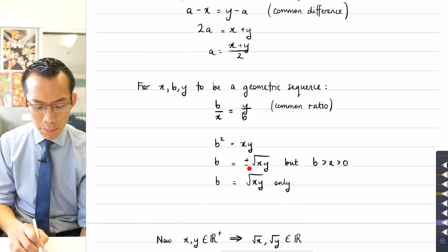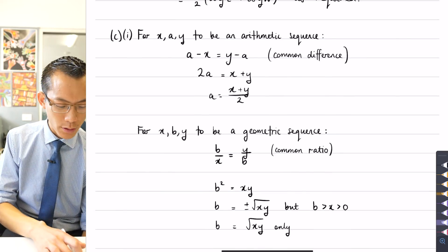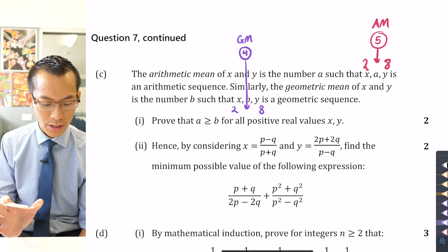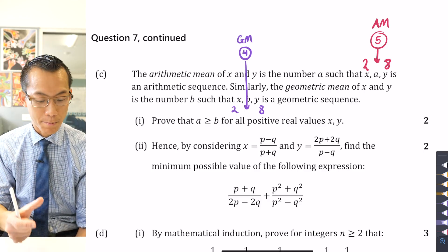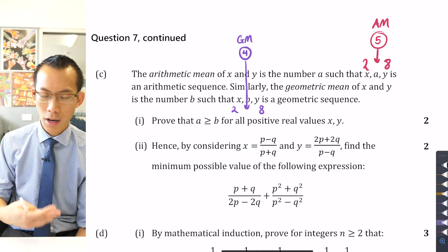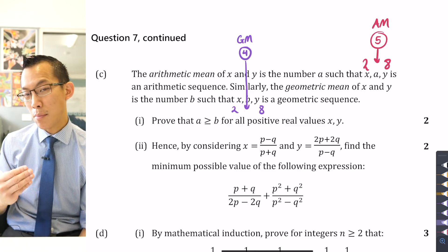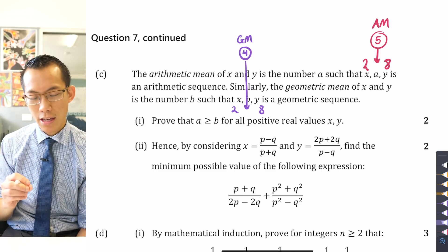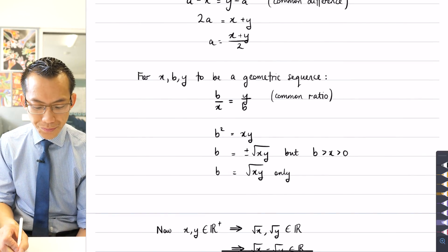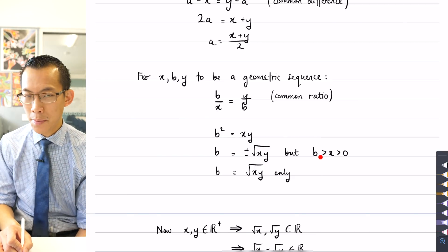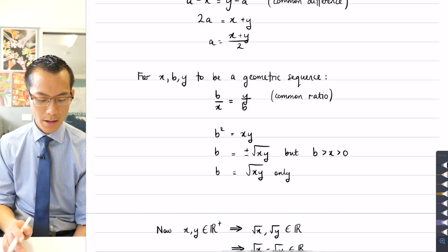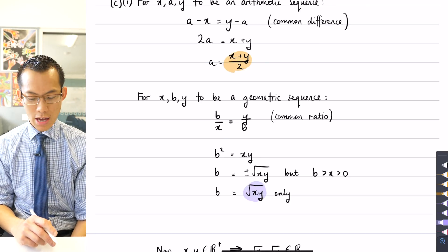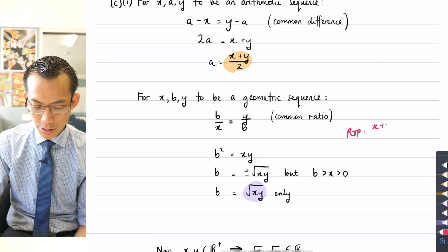For the geometric sequence, the common ratio condition gives b² = xy, so b = ±√(xy). Since x and y are specified as positive real values, I want the positive geometric mean. If b were negative, of course a is bigger, but that's a trivial result. So I'm specifying the positive value for b, where b = √(xy), sitting between x and y. What I'm required to prove is that (x + y)/2 ≥ √(xy).